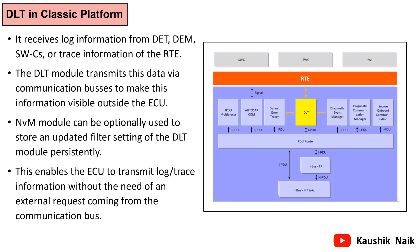Coming to the classic platform, the DLT module lies in the service layer as shown in the figure. It can interact with software components, DET and DEM modules, to get the logs. These logs can be transmitted on a communication bus. The DLT also interacts with the NVM module to store the filter settings. These filter settings can be modified during runtime by sending a command message from an external tool.